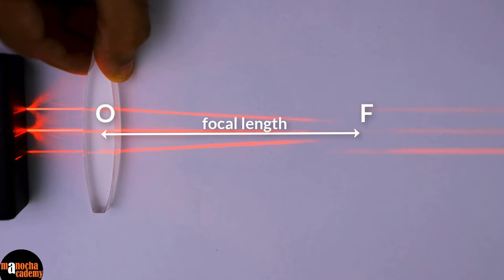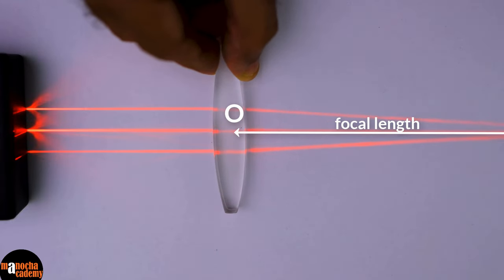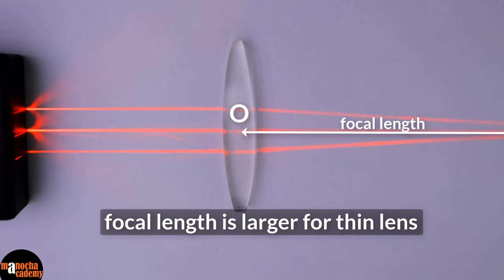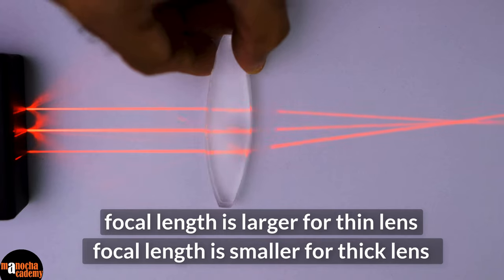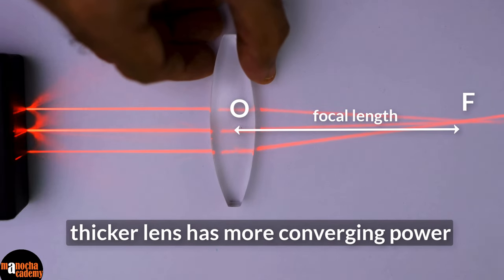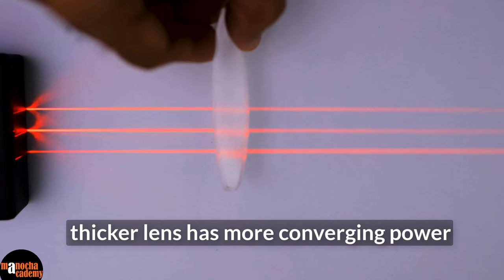The focal length is the distance from the optical center of the lens to the focus. The focal length is larger for the thin lens and smaller for the thick lens. Why? Because a thicker lens has more converging power than a thinner lens.